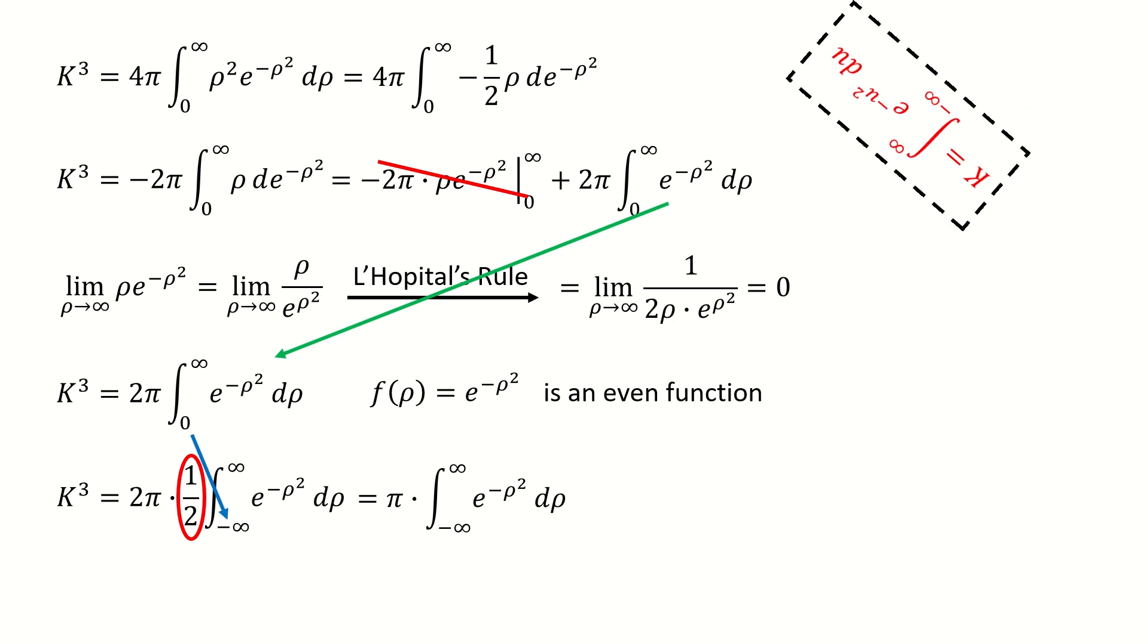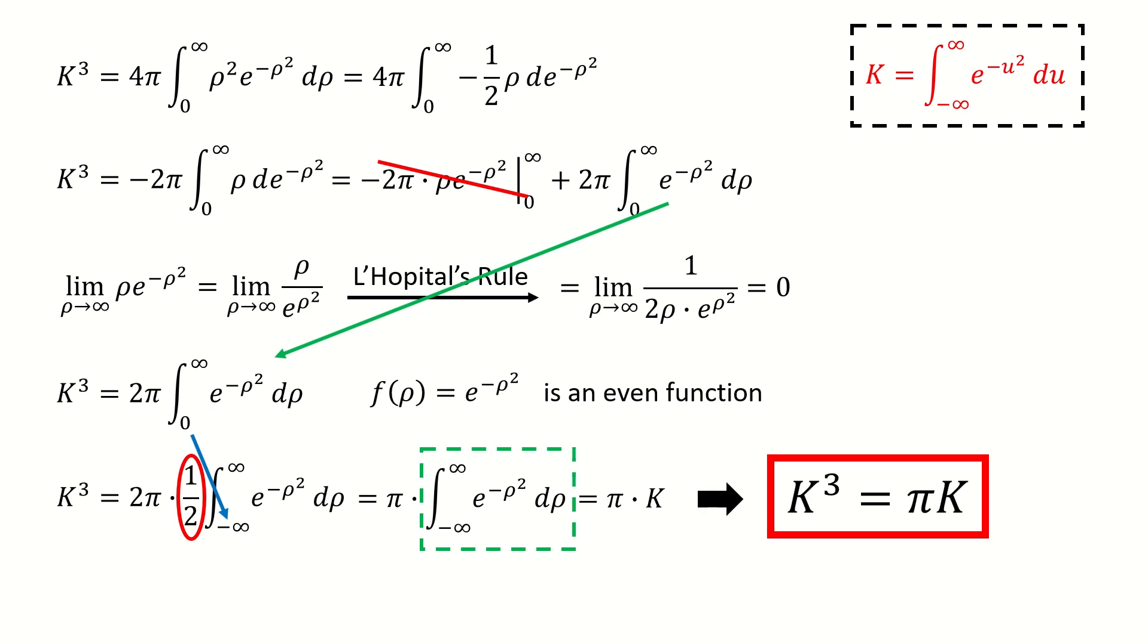Remember the definition of our K. This integral is equal to K, so we got here. So finally, we got K cubed equals to pi times K. If you remember, in the very beginning of this video, I said we will calculate this integral by without calculating this integral. That sounds like it makes no sense. But here is the reason.